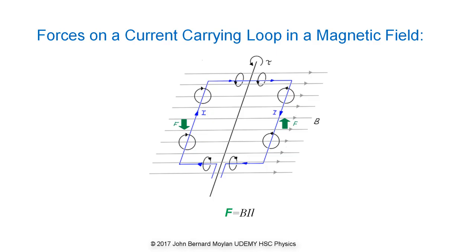The forces produce a torque on the loop which results in a rotational motion as indicated by the arrow marked tau. The magnetic fields due to the currents in the ends of the loop do not produce a force on the loop as these currents are parallel to the external magnetic field.